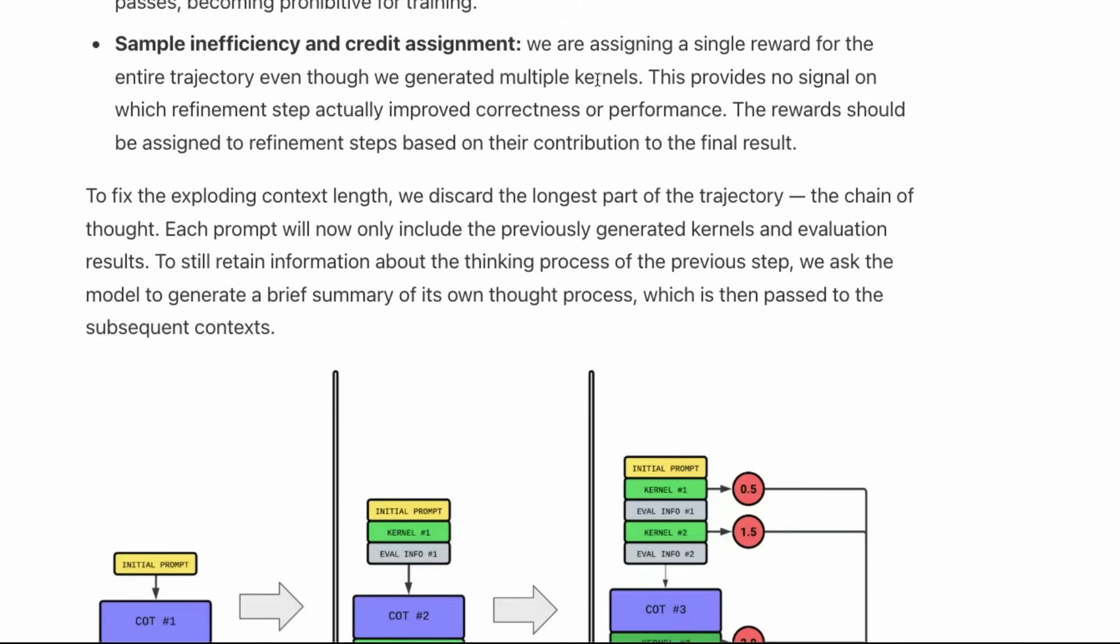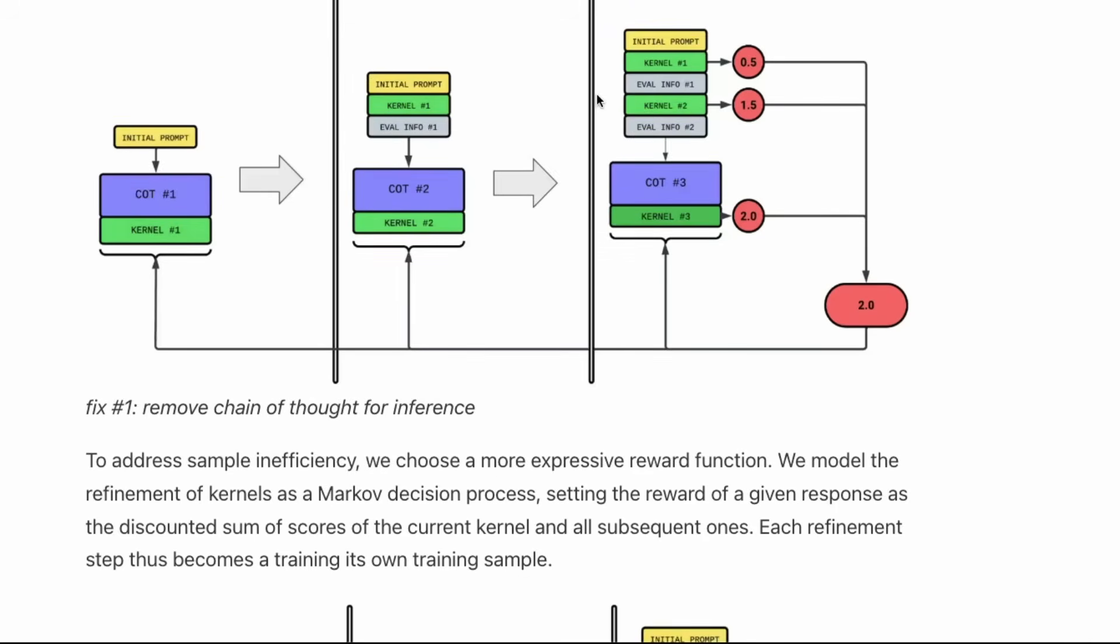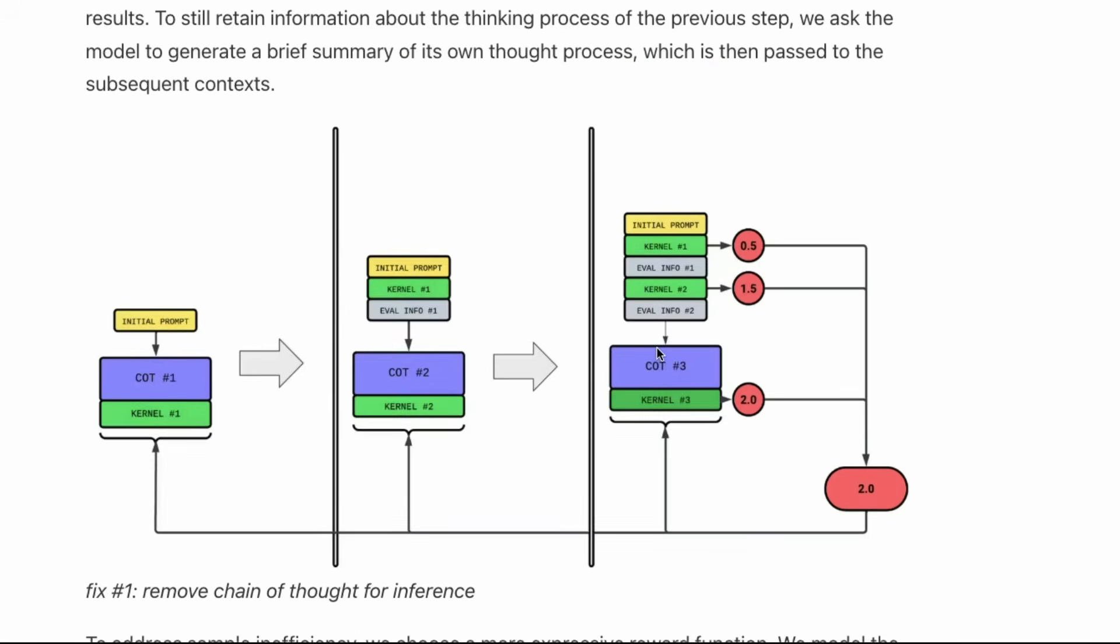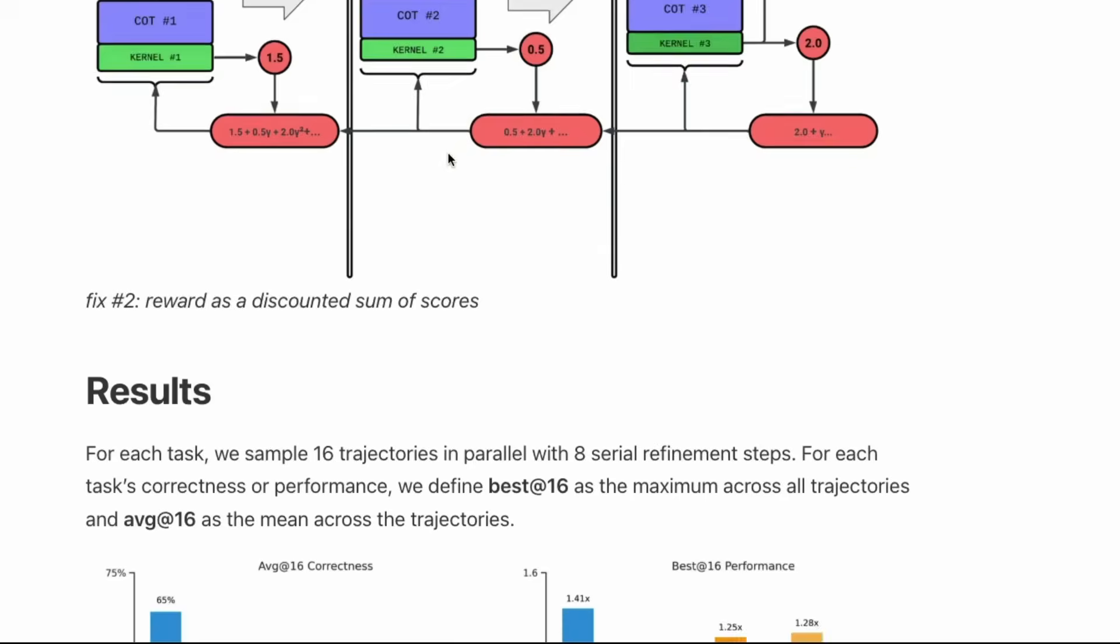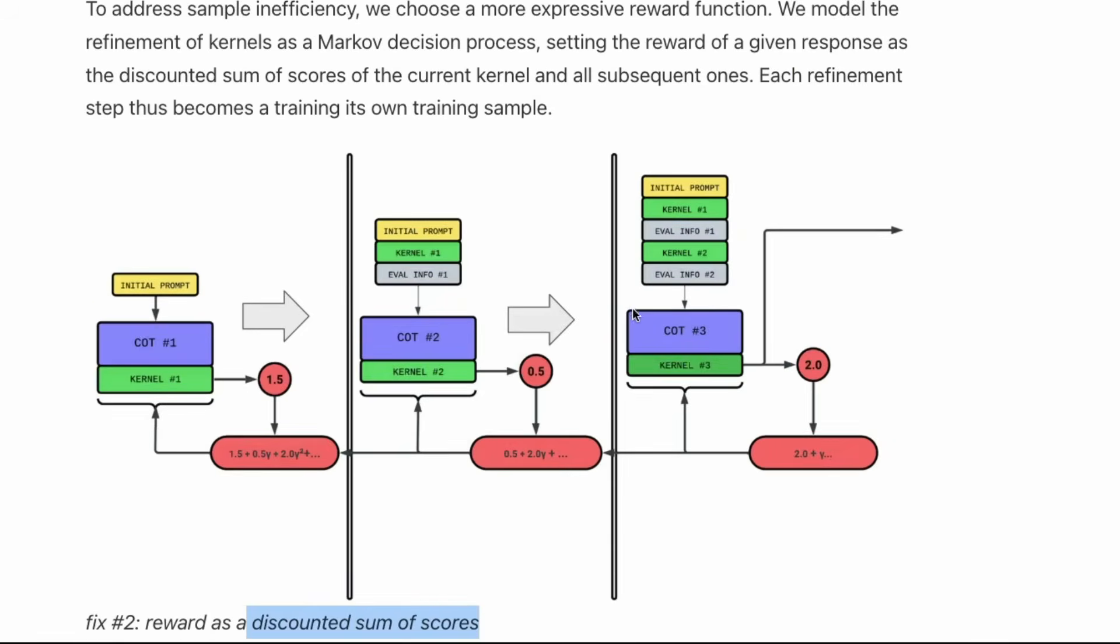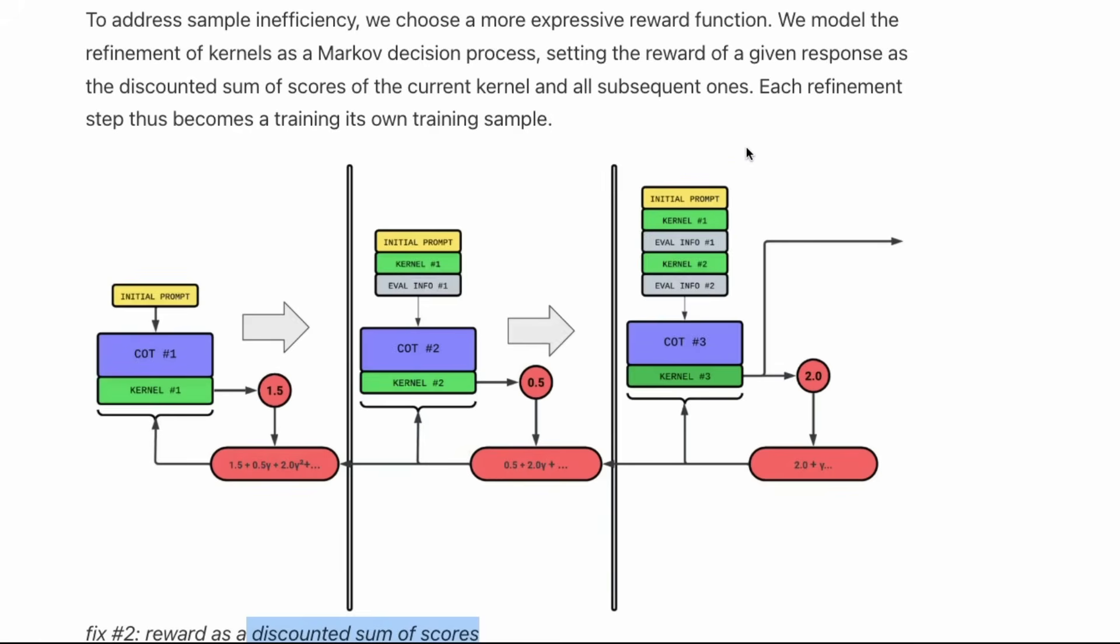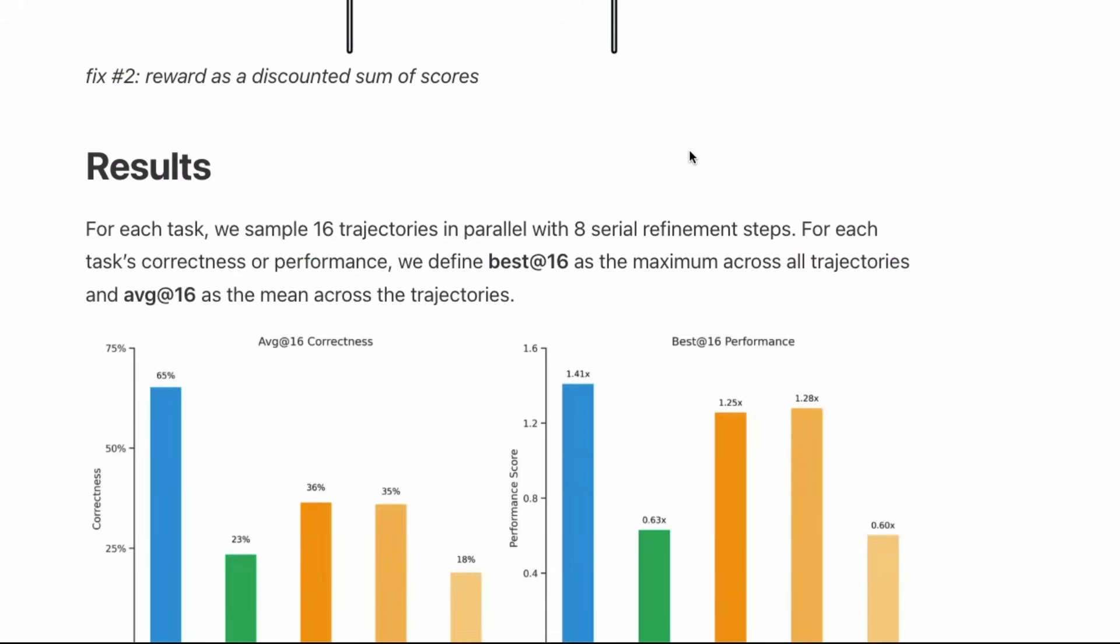You don't know in which particular step or kernel this score was generated, so it doesn't have the knowledge to optimize for that specific kernel. These two problems were handled by simple answers. First, they've removed the chain of thought for inference - whenever it becomes really long, they removed the chain of thought and added just a summary. This helped them retain the context but not the entire chain of thought. The second thing is they've used a new reward called discounted sum of scores. It's like a Markov decision process - each refinement step becomes its own training sample. It's a score dependent on the previous score.